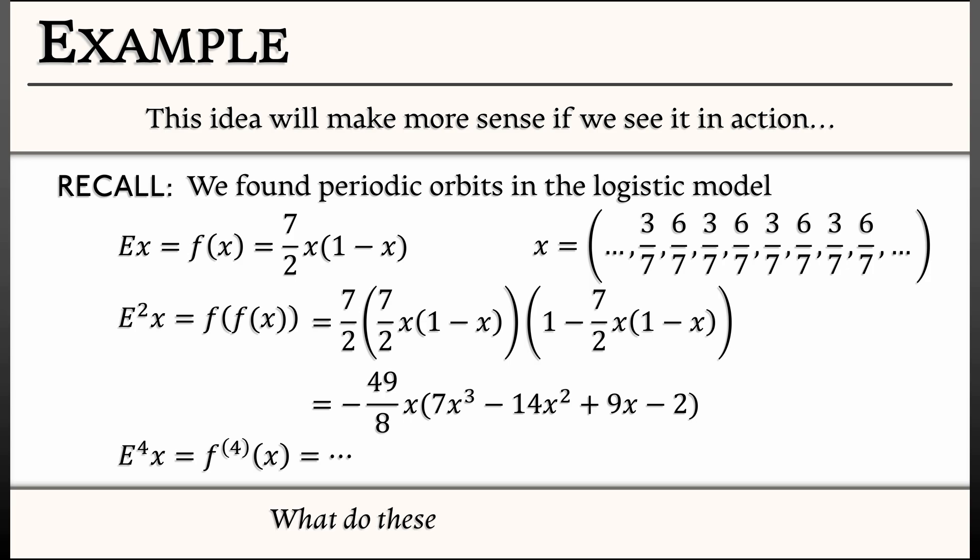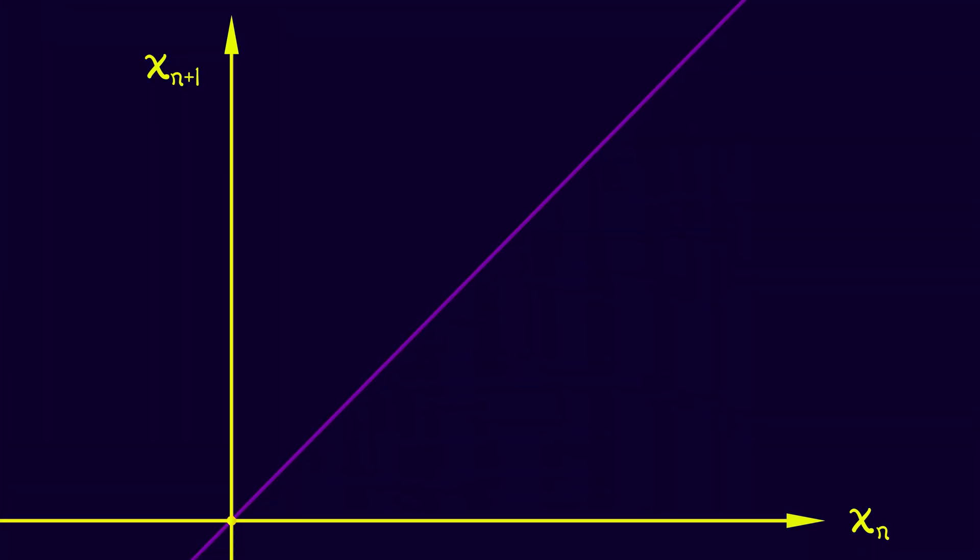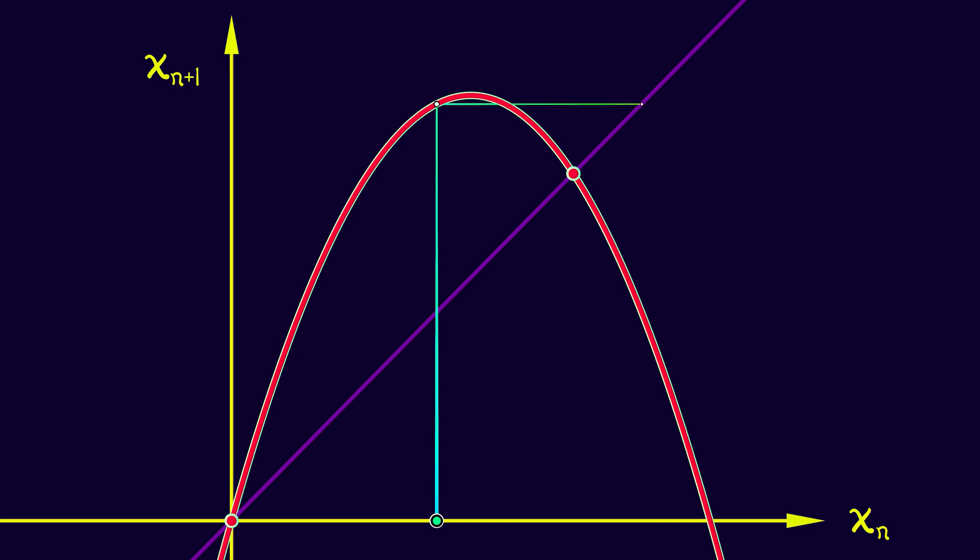Now, does this really work? What do these compositions look like? If we draw the diagram associated to this system, if I look at the graph of f of x, then what we noted was that at 3 sevenths and 6 sevenths, there is precisely a period 2 orbit. Great.